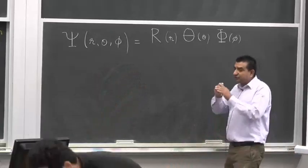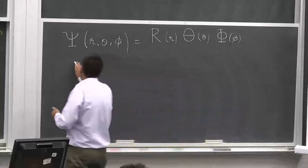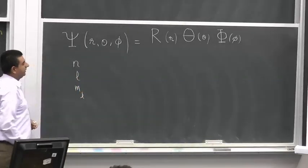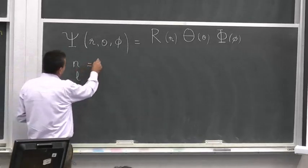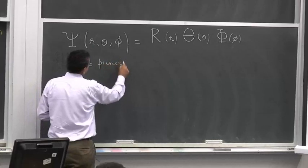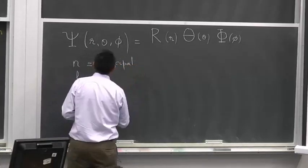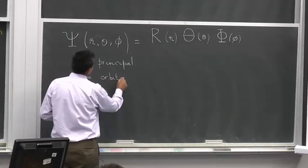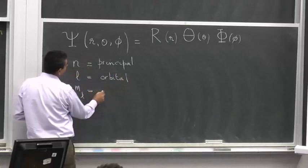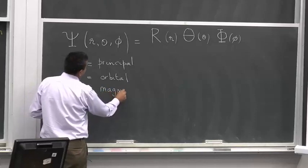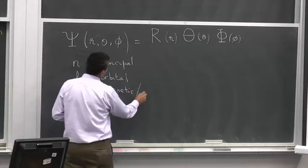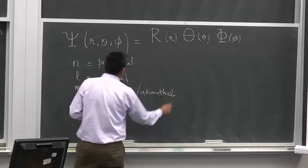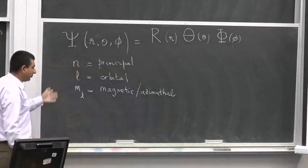We have three quantum numbers: n, l, and ml. n is called the principal quantum number, l is called the orbital quantum number, and ml is called the magnetic or azimuthal quantum number. We'll explore why these quantum numbers are given these names in a minute.